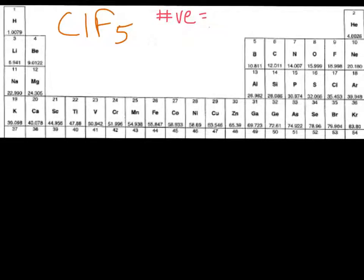So chlorine has seven valence electrons, and fluorine has seven as well, and there are five fluorines. The molecule does not have a charge, so we add those together, and we get 42 valence electrons.